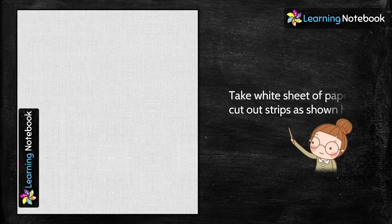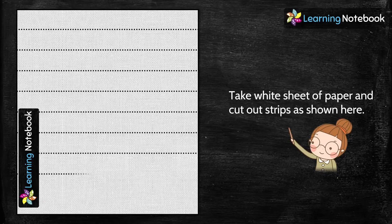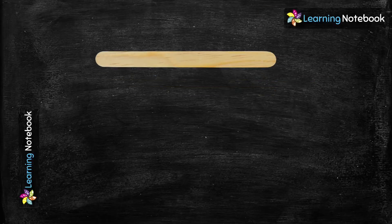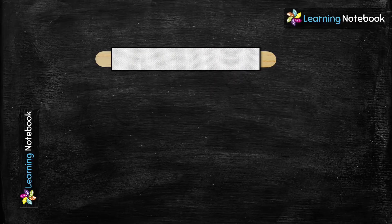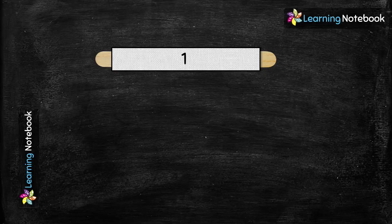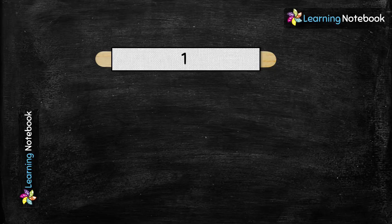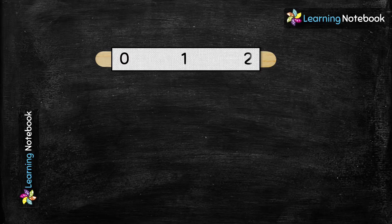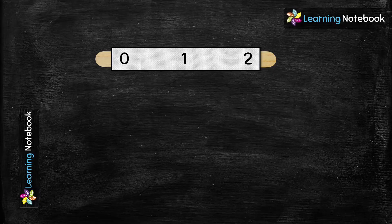Now in the next step, let's take a white sheet of paper. Now let's write 1 in the middle of this white strip. Students, what comes before 1? Yes, 0. And what comes after 1? 2. And 1 is in between 0 and 2.